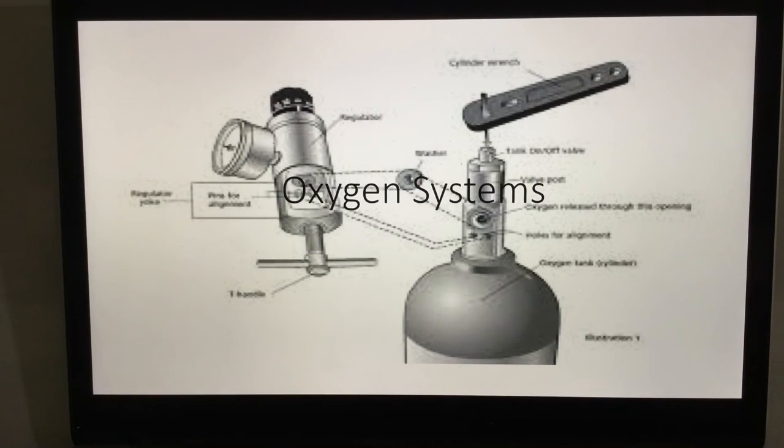Now coming off this regulator assembly towards the most distal port, you would have a flow meter. This flow meter regulates the volume and liters of oxygen being emitted out through that tank. It may start off at zero and move up in increments of 0.5, or may just start at 2, 4, 6, 8, 10, 12, 16, 18, 20, up to 25 liters per minute.